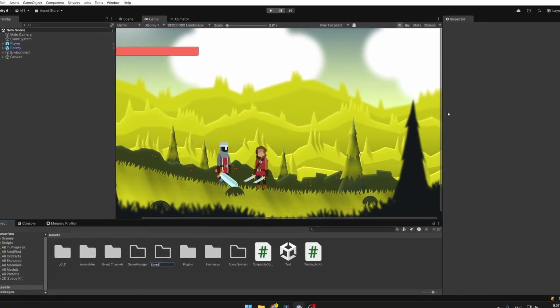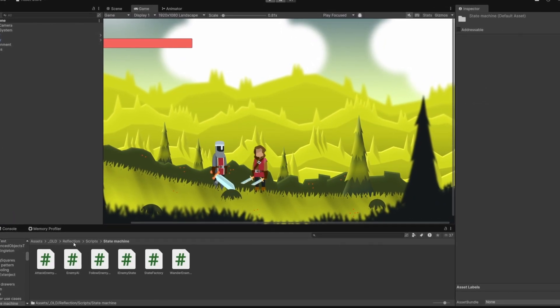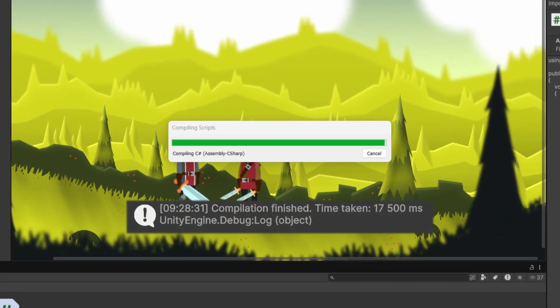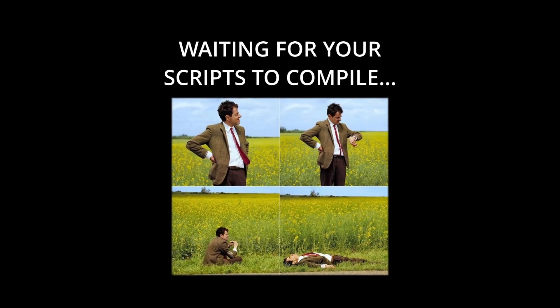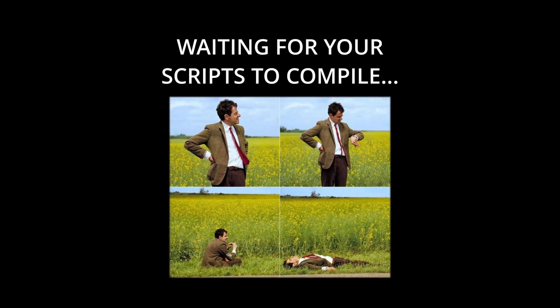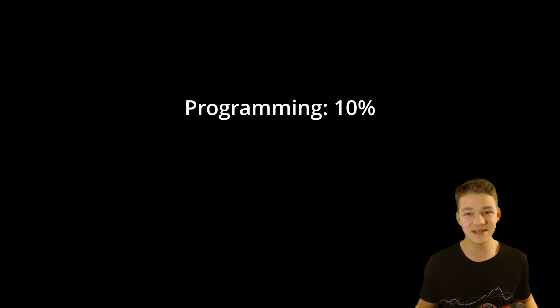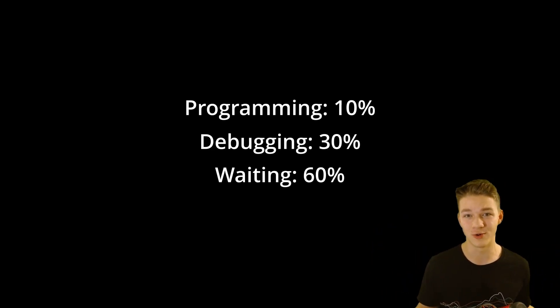As your Unity project grows, you will notice that the script compilation times are getting slower and slower. Not only is it annoying to wait each time you edit a small part of one of your scripts, but it also makes the whole development process much slower.